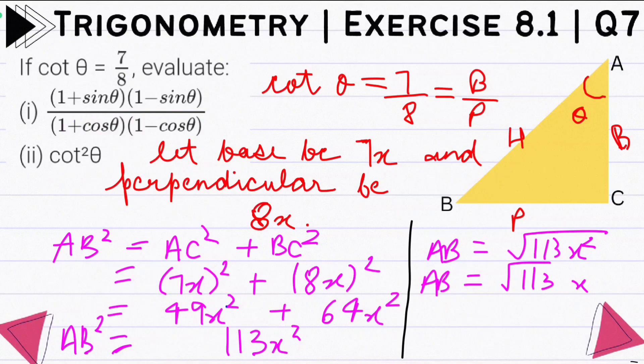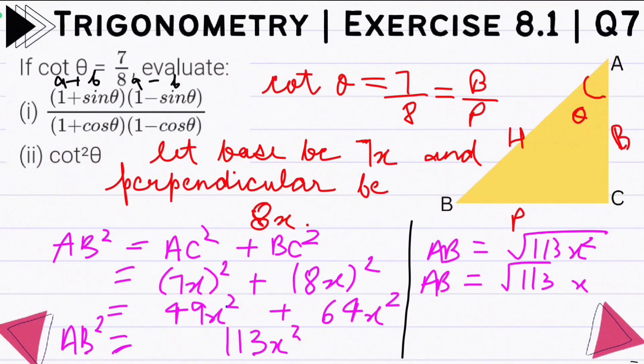So now let's solve it. In the first part, you can see it is in the format of (A+B)(A-B). So using the algebraic identity (A+B)(A−B) = A²−B², the numerator (1+sinθ)(1−sinθ) becomes 1² minus sin²θ. So we write: 1 minus sin²θ upon the denominator.